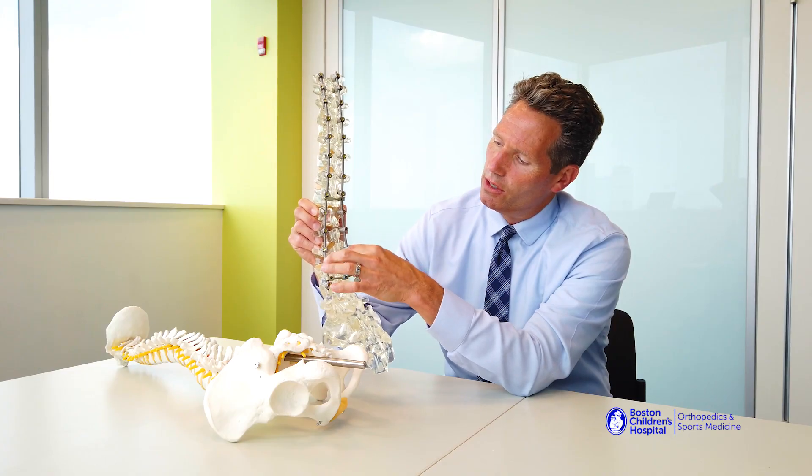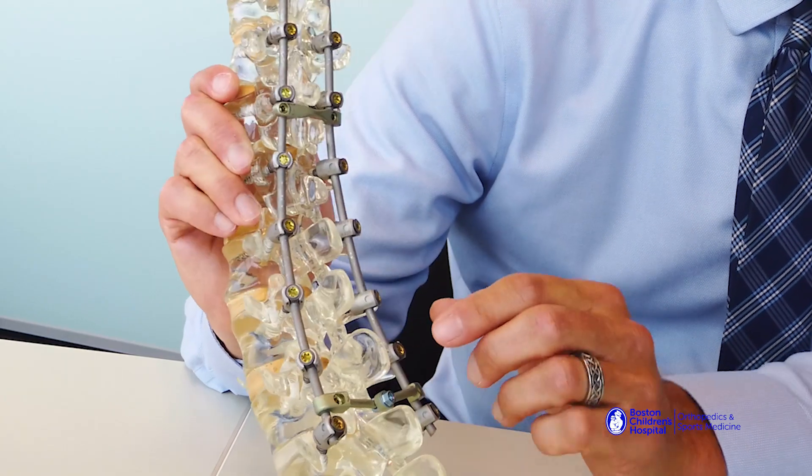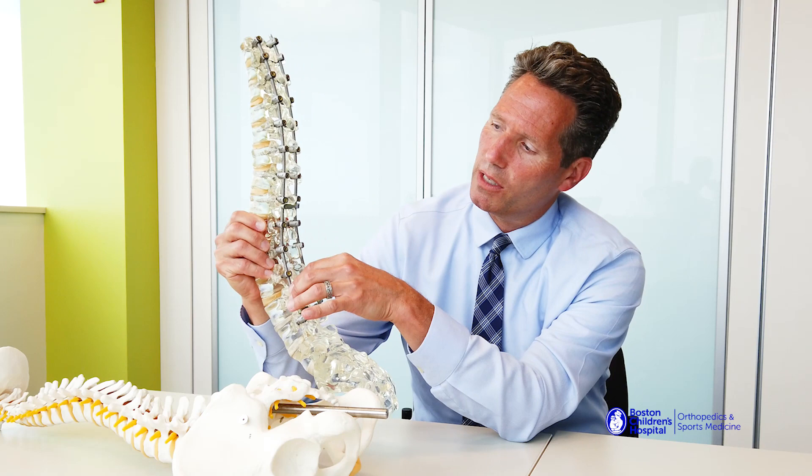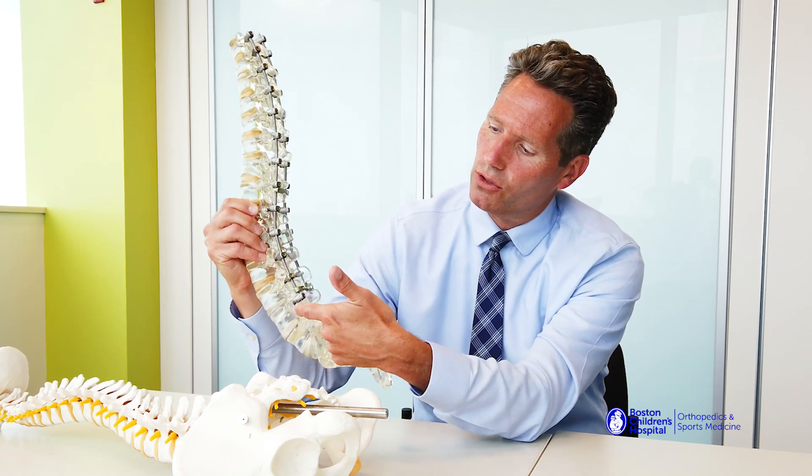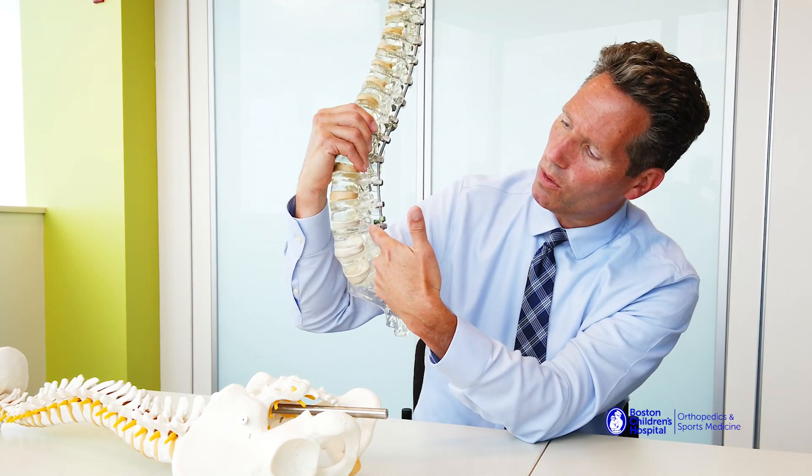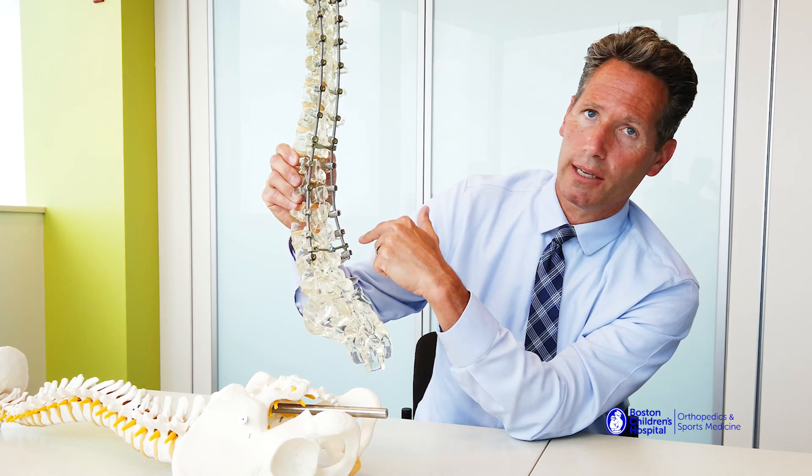So you can see here these are the different vertebra that we're fusing and making grow together. This is what the spinal instrumentation looks like. These are called pedicle screws. These individual screws which go into the bone around the spinal cord on each side.